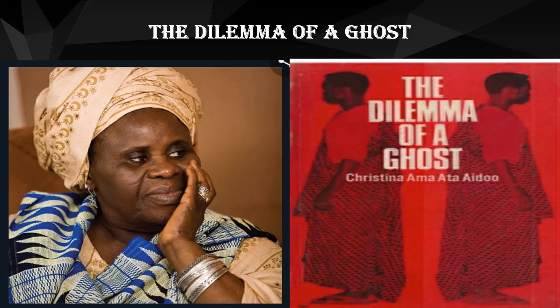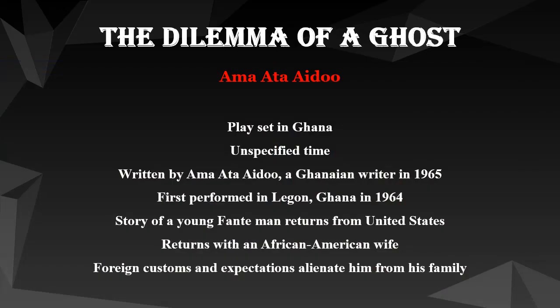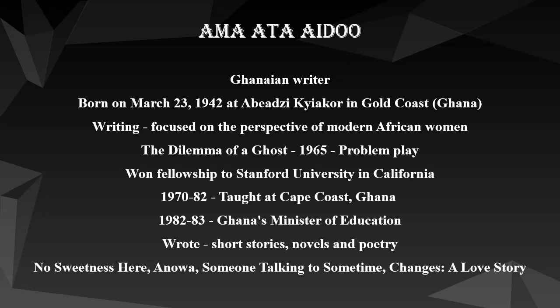In this video, we are going to see the summary and analysis of the play The Dilemma of a Ghost, written by Amma Atta Aidoo. The play is set in Ghana at an unspecified time, was first performed in Legon, Ghana in 1964, and first published in English in 1965. It is the story of a young Ghanaian man who returned from the United States with an African-American wife whose foreign customs and expectations alienate him from his family.